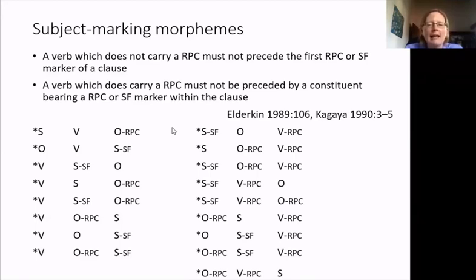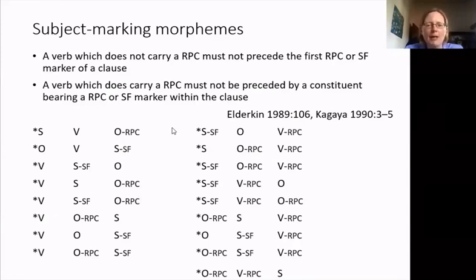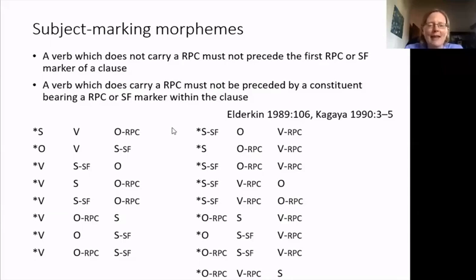We can also rule out subject marking and constituent order combinations which contain no subject marking morphemes at all — a further six ungrammatical options. In total, we've rejected 24 of the logically possible combinations of subject, object and verb, each with a subject marking morpheme or not. And we're left, wonderfully neatly, with 24 combinations which are grammatical. This raises the interesting question: why, and how has this system developed? I'll leave that as an open question. Another question I will try to address is whether these 24 grammatical combinations are actually attested in natural language use and not just in elicitation.